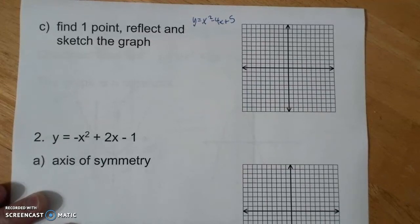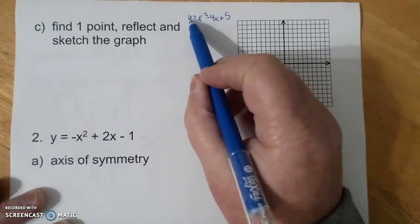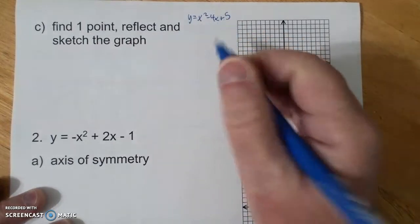This is 14-1, graphing quadratic functions. This is actually a continuation of the last problem, y equals x squared minus 4x plus 5.